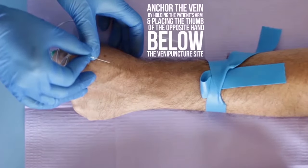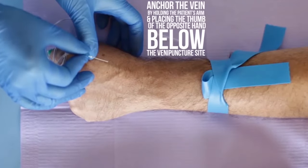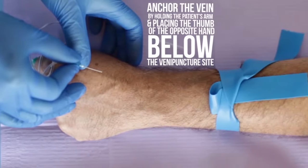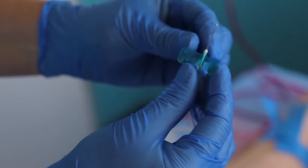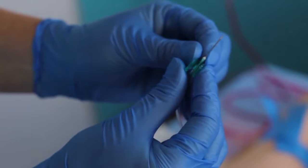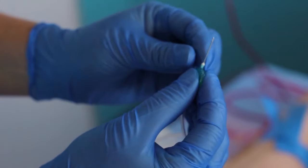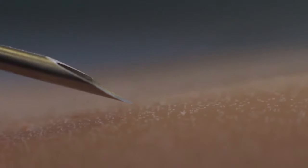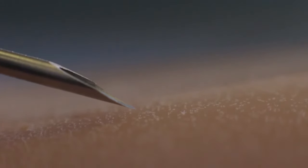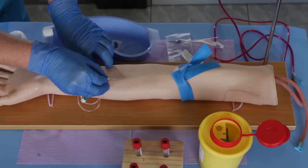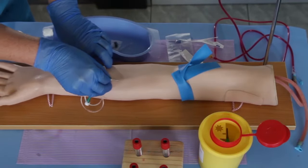Anchor the vein by holding the patient's arm and placing the thumb of the opposite hand below the venipuncture site. Gently bend the two wings of the butterfly together and hold between the thumb and index finger of your dominant hand. Ensure that the bevel of the needle is facing up. Enter the vein swiftly at a 15-degree to 30-degree angle.